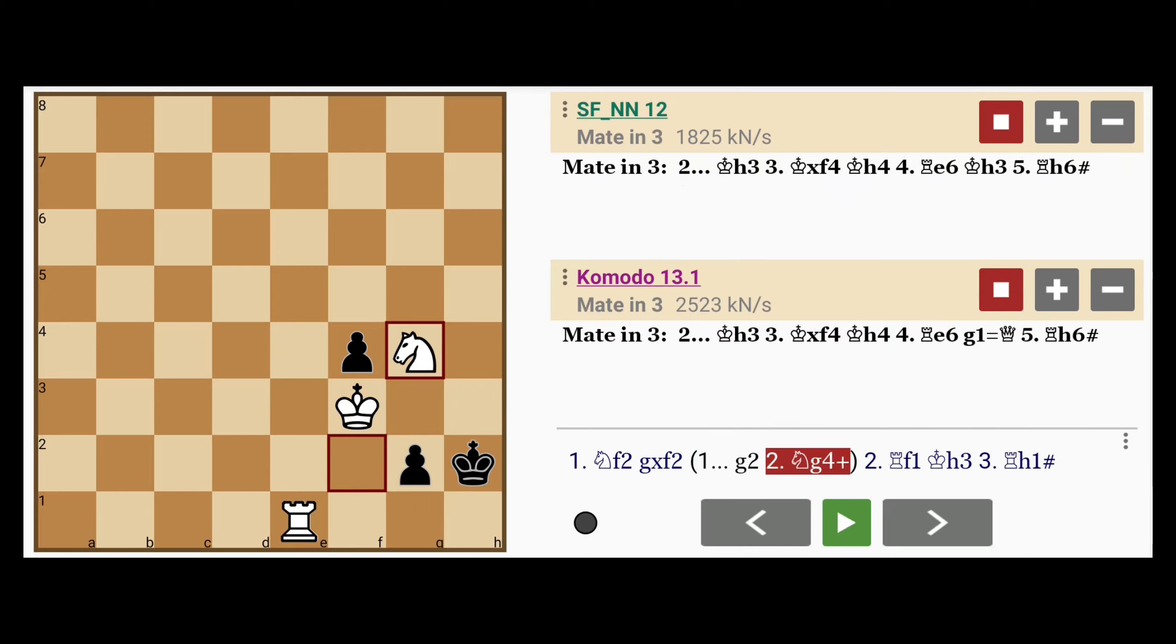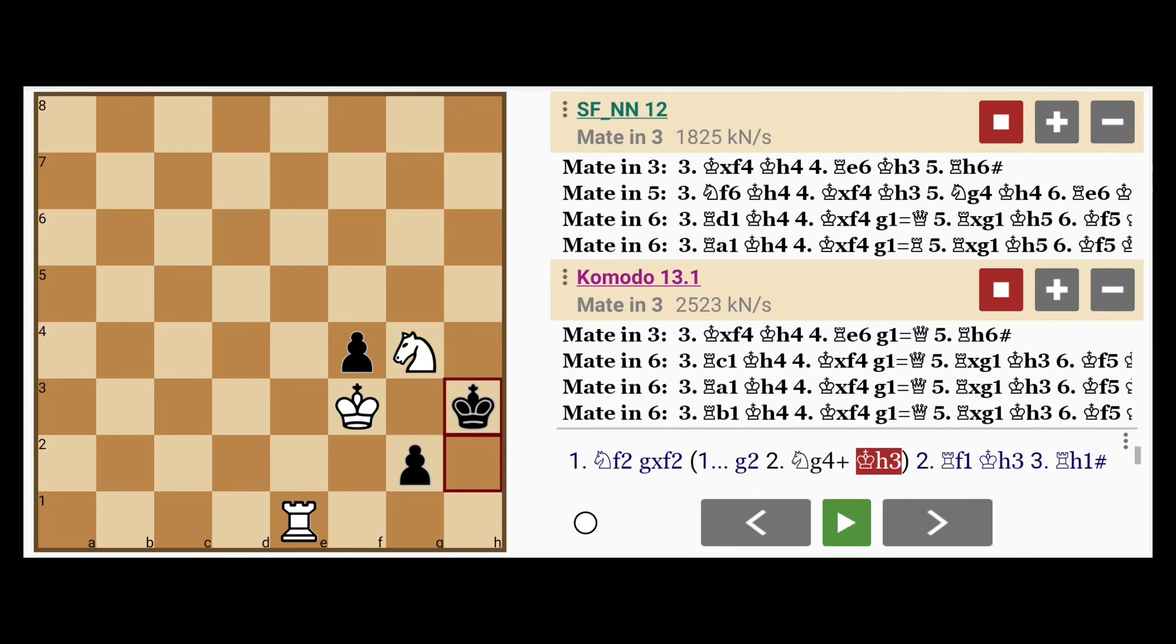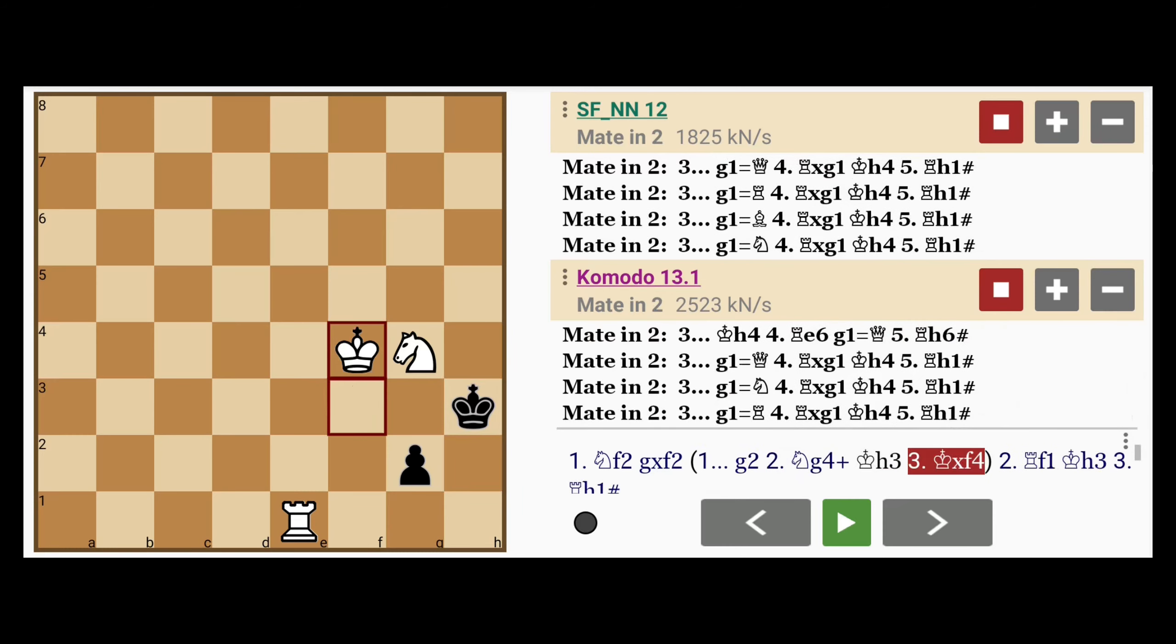The knight becomes useful here instead. The king is forced back to h3, and then white captures the pawn on f4.